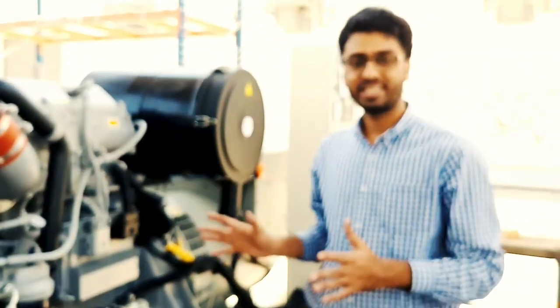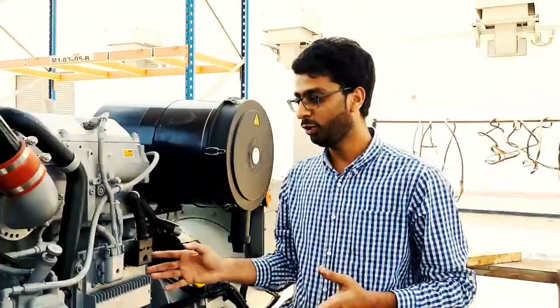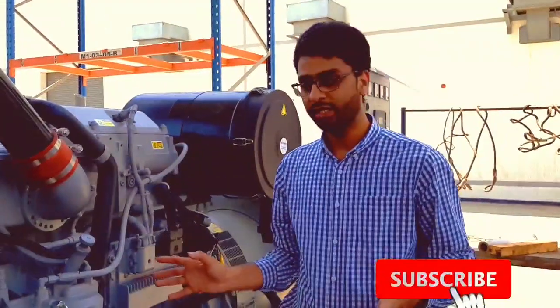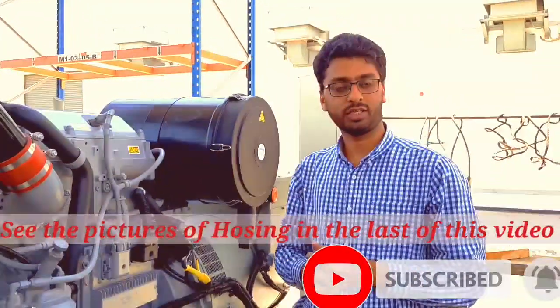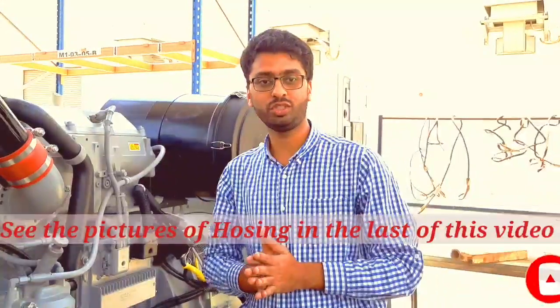After that, it will return to the tank. This is a simple fuel system for the Perkins 2500 series. The circulation, all the pipes and the system—I've told you everything. I hope you like this video and we will come back with the next video very soon. Till then, take care and have a nice day.